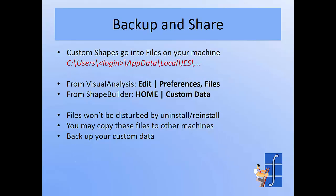Once you create your custom shapes and get them into the database, they go into a file in the AppData Local IES folder. You can get to this folder either from Visual Analysis or from Shape Builder in order to copy your files to another machine or back them up. You don't have to worry about these files being disturbed by an uninstall or reinstall — we recognize customized data and do not uninstall anything like that, so your data is safe on your machine unless your hard drive crashes.